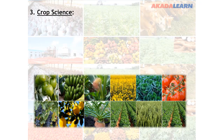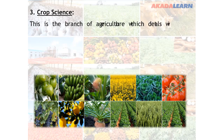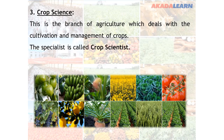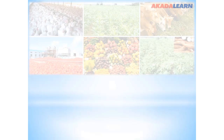The third branch is crop science. Crop science is the branch of agriculture which deals with the cultivation and management of crops. The specialist is called a crop scientist. Then we have soil science.